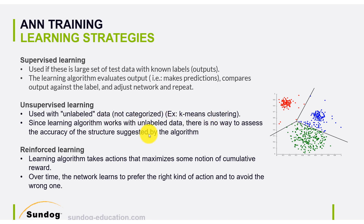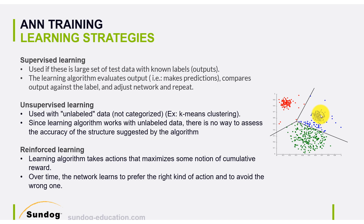Because we don't have labeled data, there is no way to assess the accuracy of the structure suggested by the algorithm. The algorithm might say all the red lines are one class, blue lines are another class, and green dots are another class. However, another technique might say maybe some of the green ones can go under the blue ones — and there's no way of saying which one is correct, because we don't have a label. For supervised learning, however, we can easily measure the accuracy of our training strategy.